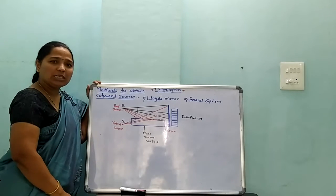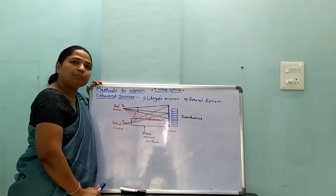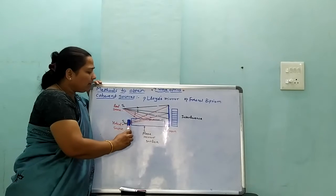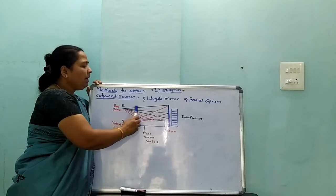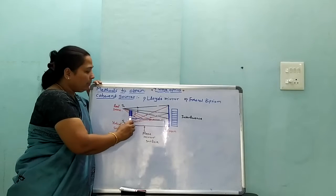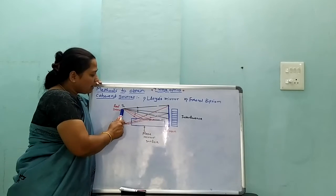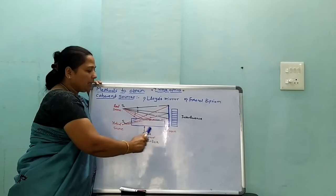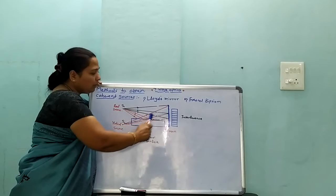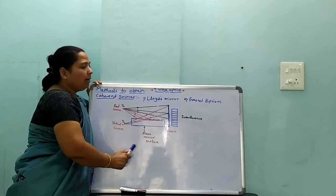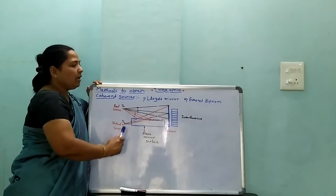How to prepare coherent sources? The first method is Lloyd's mirror method. In Lloyd's method, take a small plane mirror surface and one source which emits light. That emitted light partially falls on a screen, and some light falls on the plane mirror surface. Those rays are reflected back towards the screen, and we get alternate dark and bright fringes. That method is known as Lloyd's mirror.